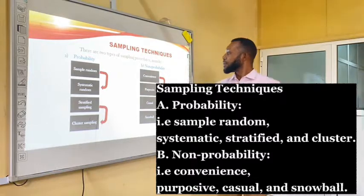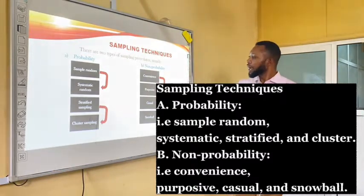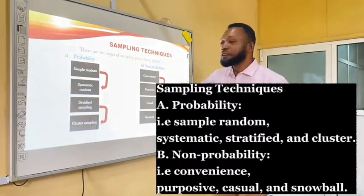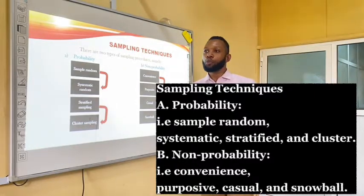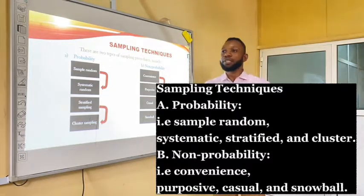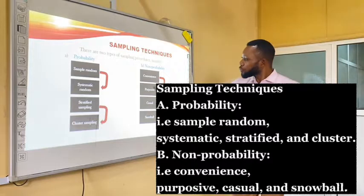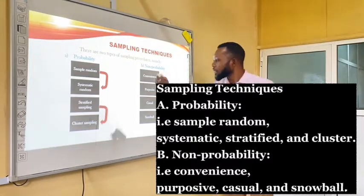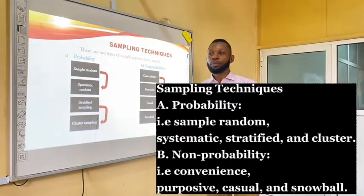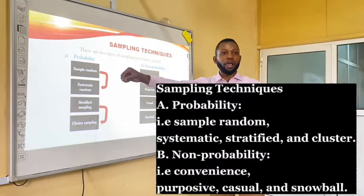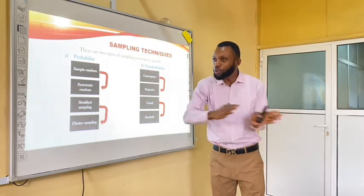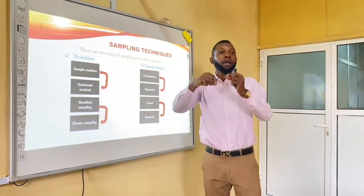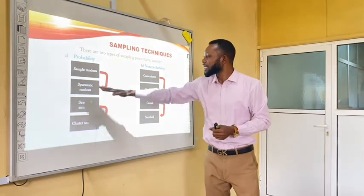In systematic random sampling, you sample by a fixed interval or portion. For example, if you are doing a content analysis of newspaper editions, you can start picking from edition 2, then leave an interval of 3 — so 2 plus 3 gives you 5, then 5 plus 3 gives you 8, then 8 plus 3 gives you 11, and so on. You fix the interval and consistently pick every third item. This is systematic random sampling.